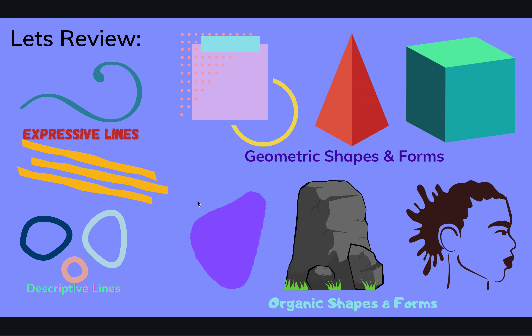Organic shapes and forms are forms that are a little bit more natural — they have irregular edges. Organic shapes, just like geometric shapes, are still two-dimensional. You can measure how wide they are and how tall they are, but they have no depth. Organic forms, however, like this rock, have that added dimension — height, width, and the illusion of depth, how far back they go.